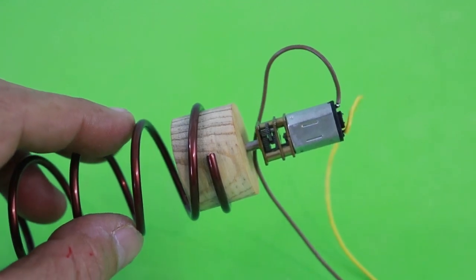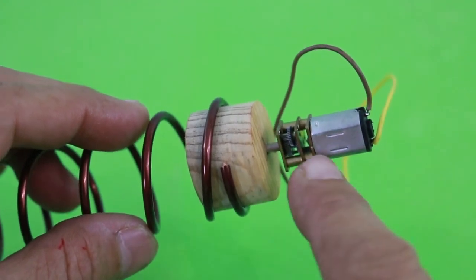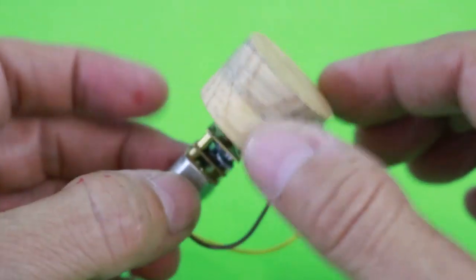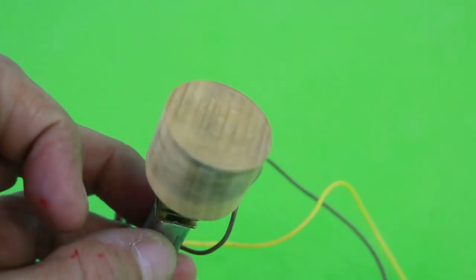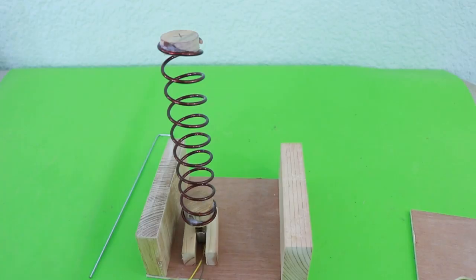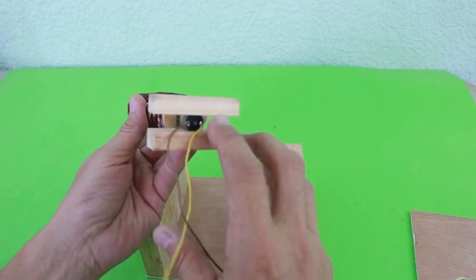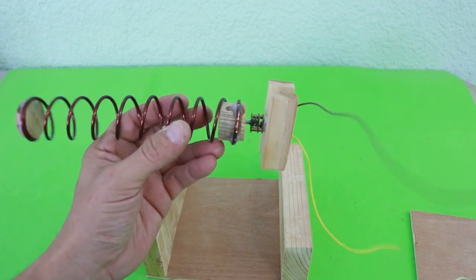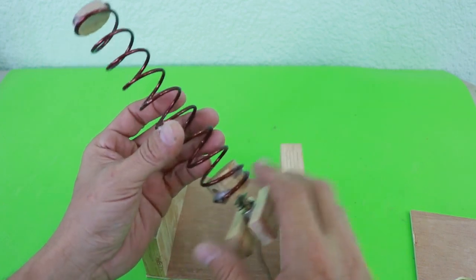The spiral is attached to a wooden cylinder and this in turn to the axis of a gear motor for slow movement. So, the motor is glued in the middle of two pieces of wood and the axis of the motor to the wood cylinder which in turn is glued to the spiral.